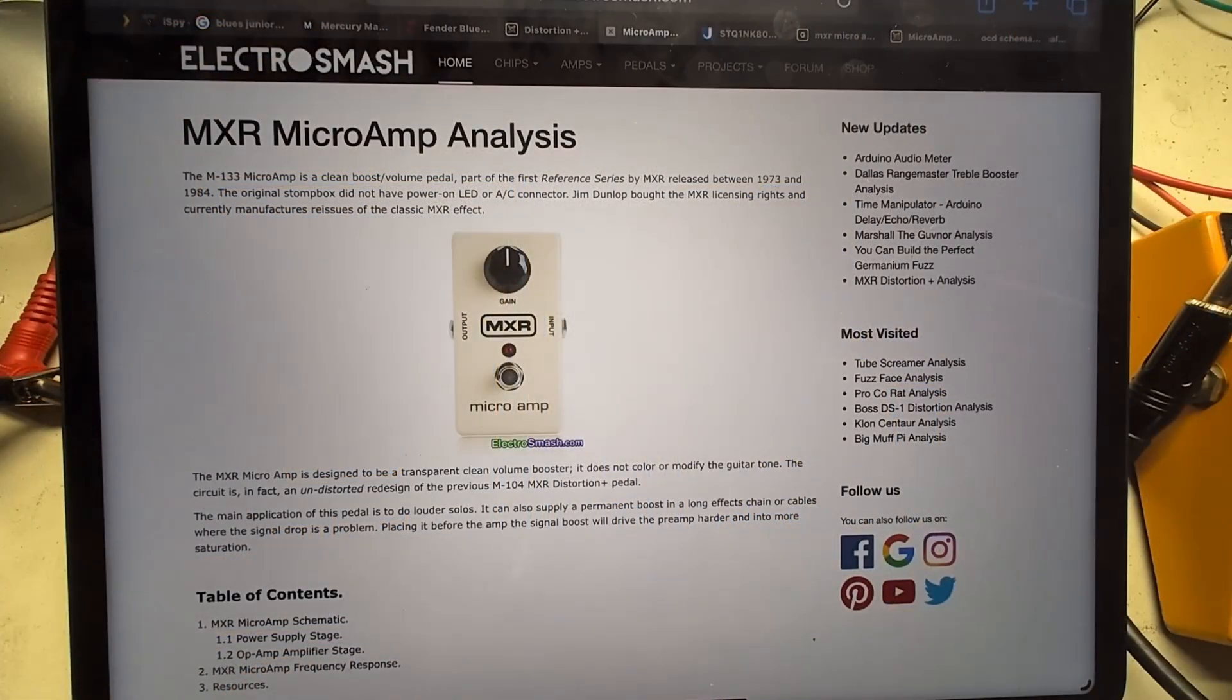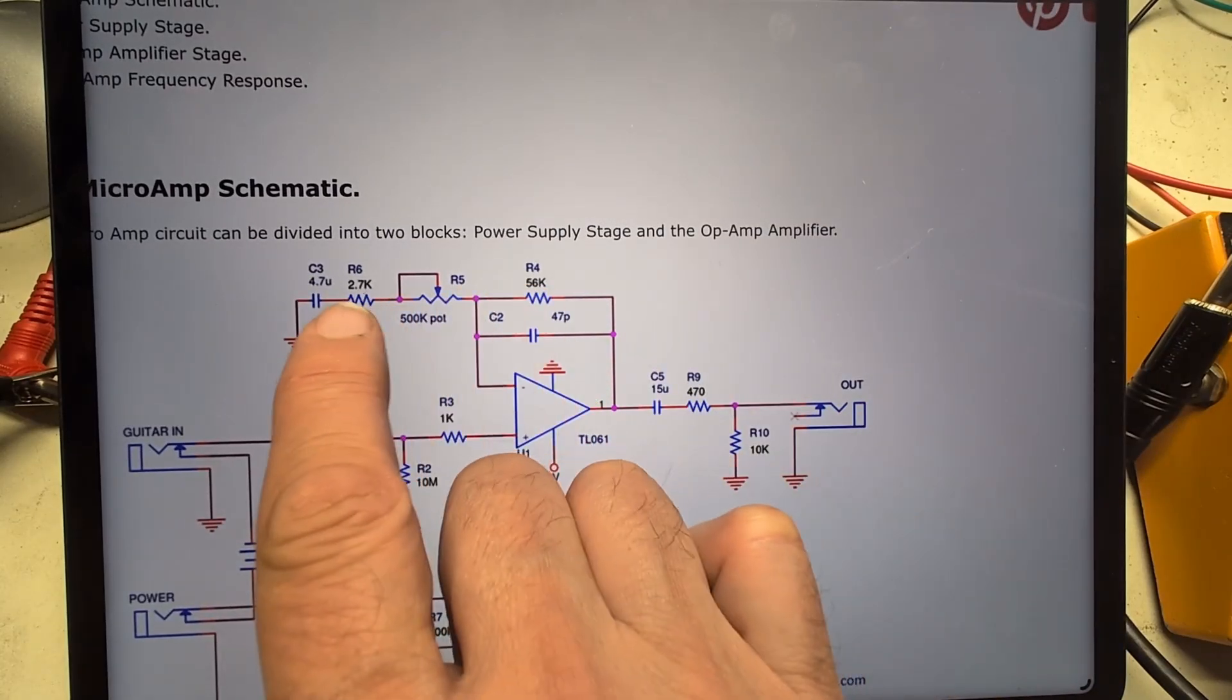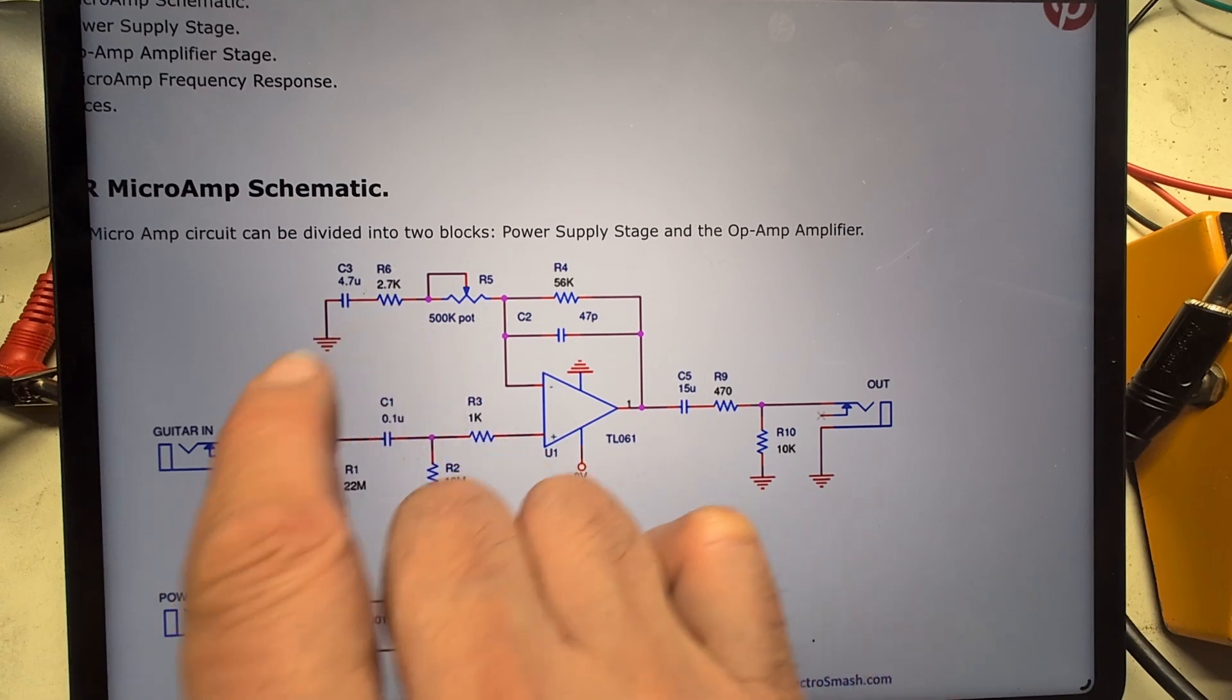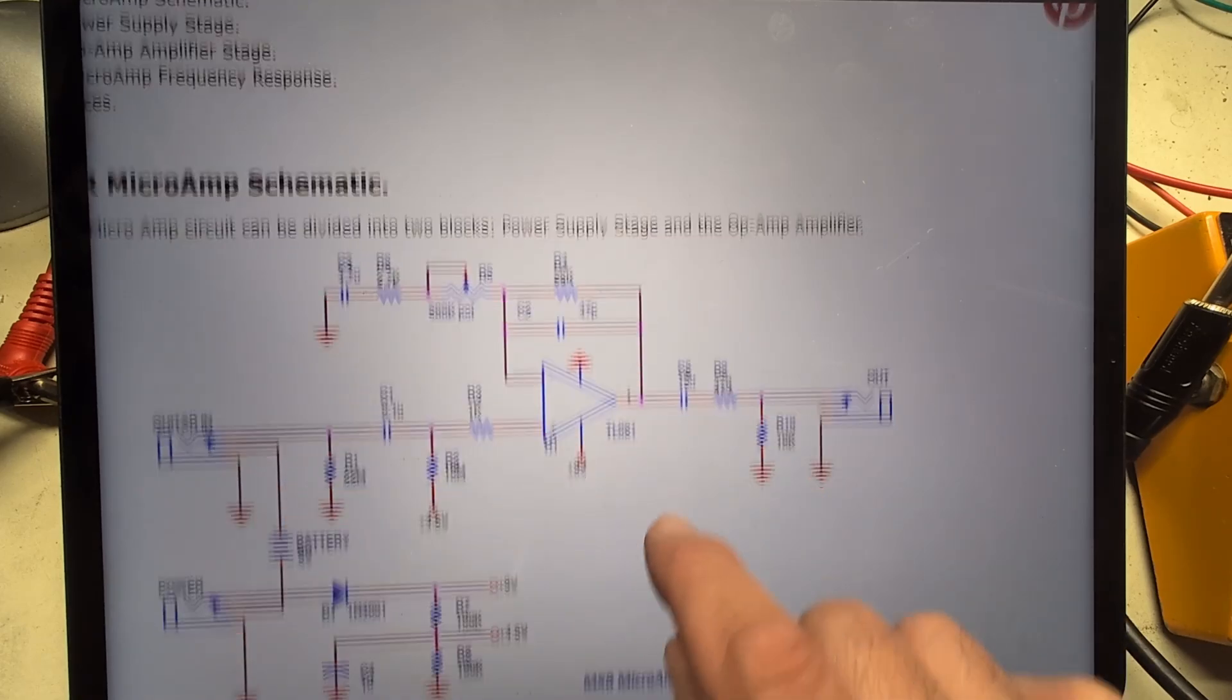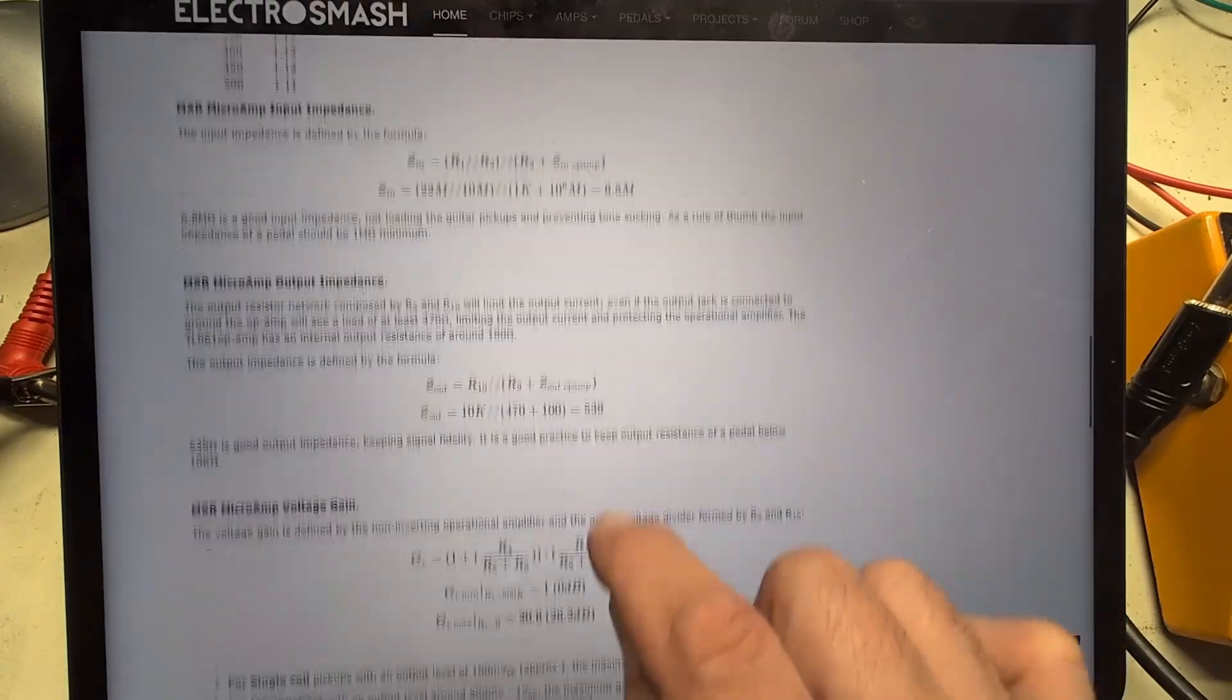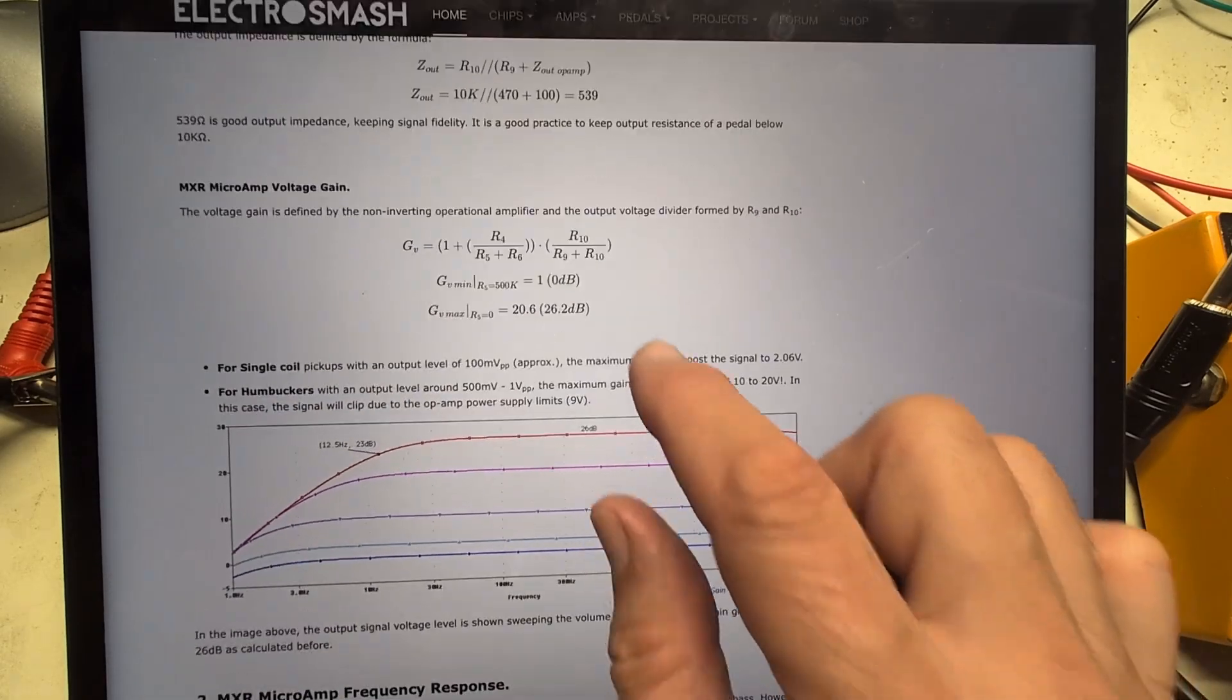Let's start with the schematic analysis. Here's our schematic. Op amp, gain set between here and here. Low end filtering is set here. Quite a high value, 0.1 microfarads. Huge value here. And so what this is going to give us in terms of tone shaping, scroll down to the frequency response curve, is a very flat frequency response. And so this is quite a clean boost.